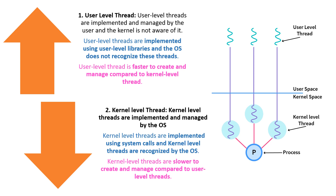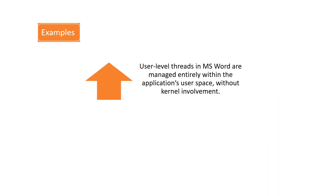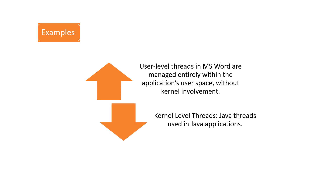Kernel-level threads are implemented and managed by the operating system using system calls, and they are recognized by the OS. System calls are a programmatic way to interact with the operating system. Kernel threads are slower to create and manage compared to user-level threads. For example, threads used in MS Word are managed entirely within the application's user space without kernel involvement — those are user-level threads. Java threads used in Java applications involve the kernel and are managed by the operating system — those are kernel-level threads.